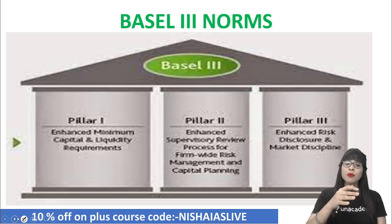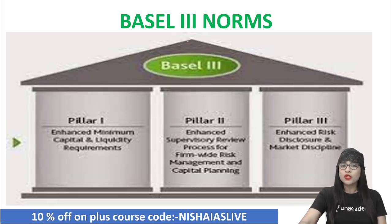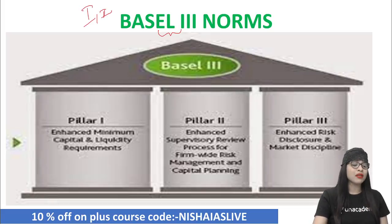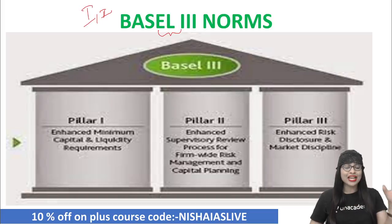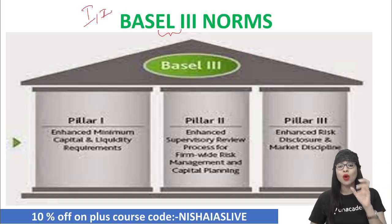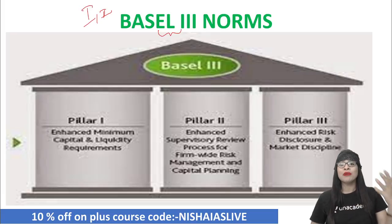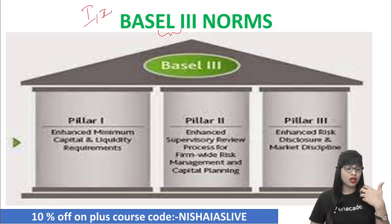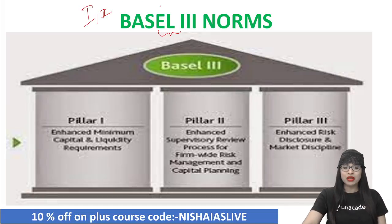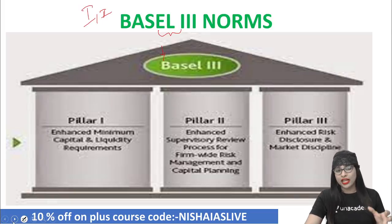We are talking about Basel 3 norms here, which means that definitely you will have version 1 and 2. Basel 1 was basically to prevent international banks from building business volume without adequate capital backing. Basel 2 was based on three pillars: minimum capital requirements, supervisory review, and market discipline. Basel 3 is also the same thing — based on the same perspective, but with a few changes.